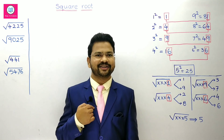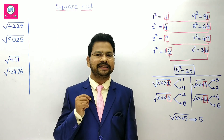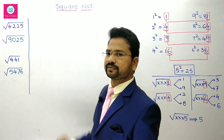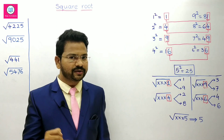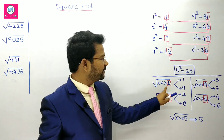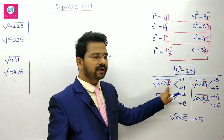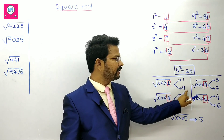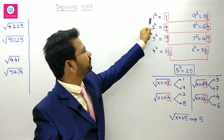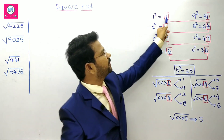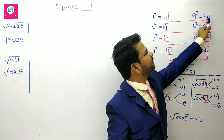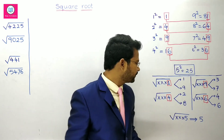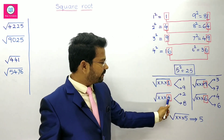Hello, hi everyone, this is Raju Komakala. In this video I am going to explain finding square roots. If a number ends with 1, either it may be 1 squared or 9 squared. You can observe here: 1 squared is 1 and 9 squared is 81, but the units place is only 1.